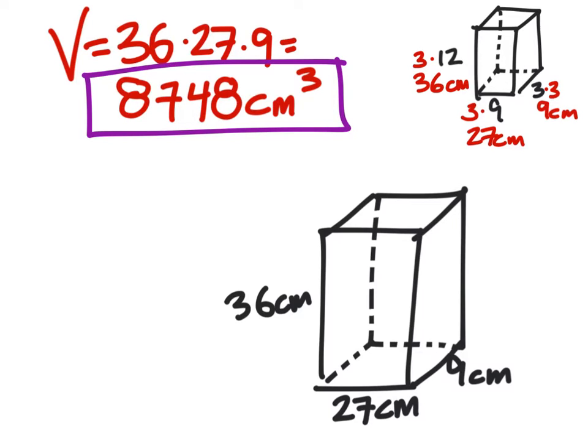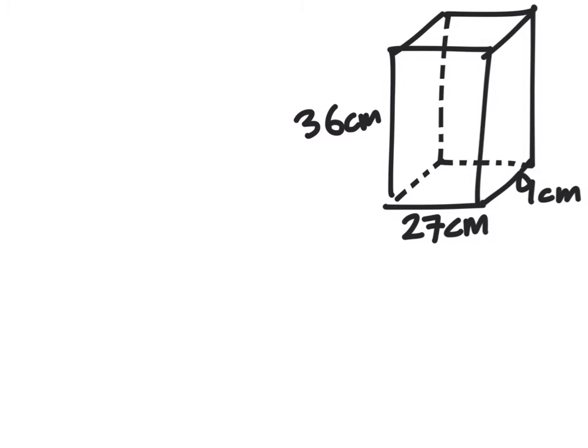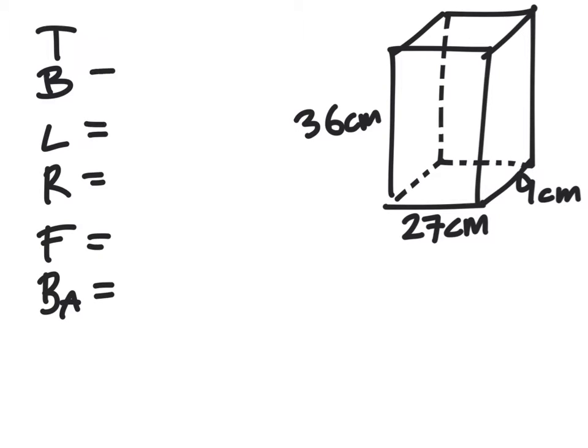But not only do we want the volume, we also want the surface area. So once again, if we identify all six of the faces, we have the top, the bottom, the left, the right, the front, and the back faces. And these should all equal some amount of centimeters squared, because it is two-dimensional for surface area. So let's start with the top.